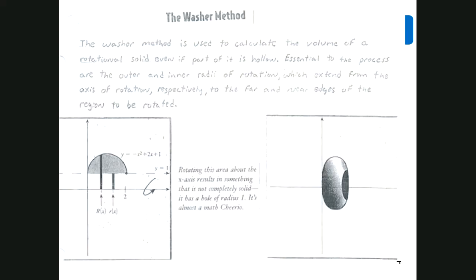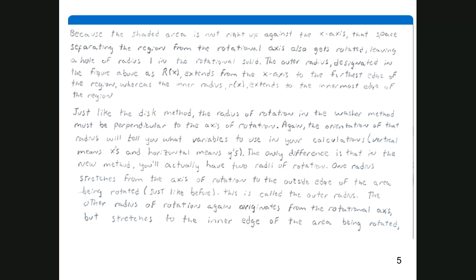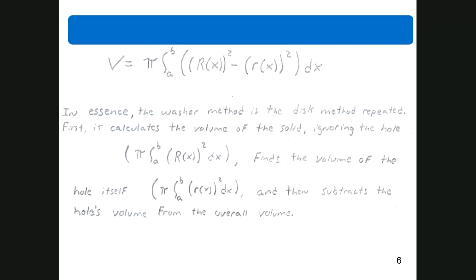Today we're going to be talking about the washer method. The washer method is used to calculate the volume of a rotational solid even if part of it is hollow. The outer and inner radii of the rotation extend from the axis of rotation to the far and near edges of the region respectively. The formula is: volume equals π times the integral from a to b of (large radius)² minus (small radius)². That's the whole formula — you find the volume of the whole object and subtract off the volume of the missing part.